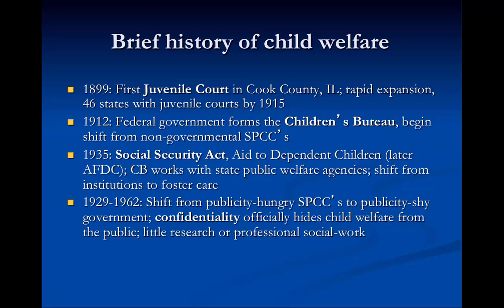In 1899, the first juvenile court we can identify was created in Illinois, and then by 1915, 46 states had juvenile courts. By 1912, the federal government formed the Children's Bureau, which still governs much of child welfare today. In 1935, the Social Security Act created Aid to Dependent Children, known as AFDC — now often referred to as TANF, Temporary Aid to Families of Dependent Children.